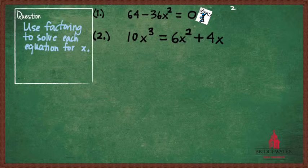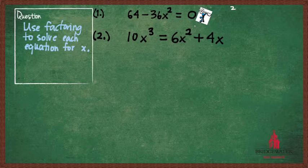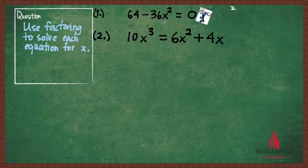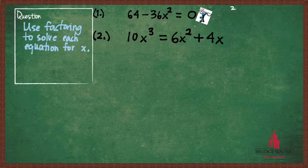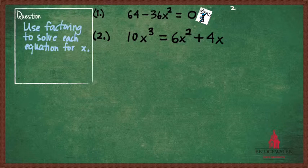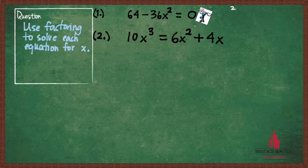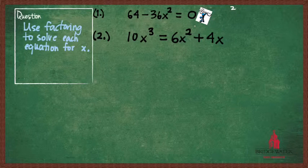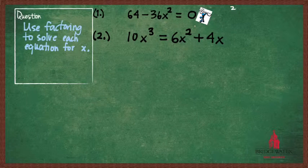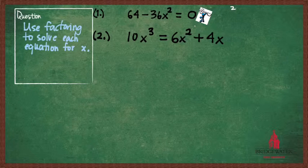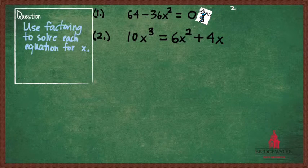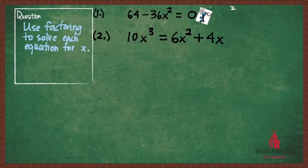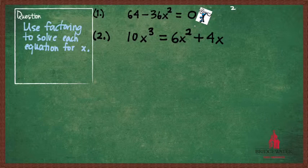Anytime we have an equation that involves multiple powers of x that we can't combine together as like terms, chances are we're going to want to factor it at some point, or at the very least, use the quadratic formula. But either one of those two strategies requires us to do one thing at the very outset, and that is get one side of the equation to equal zero. Always, always, step number one, none of these methods are going to work unless one side of the equation is first equal to zero.